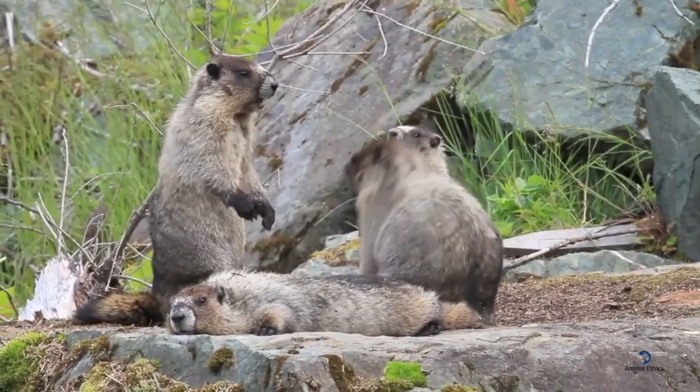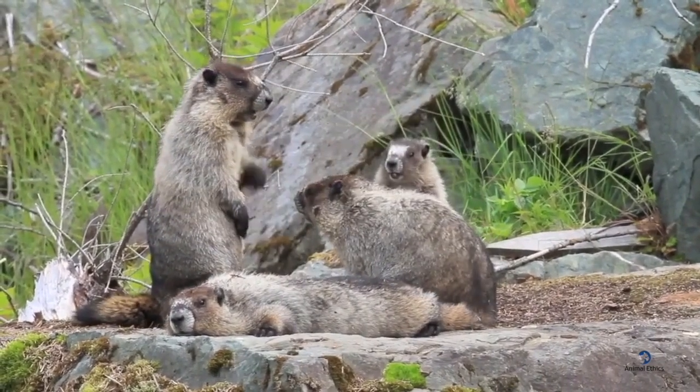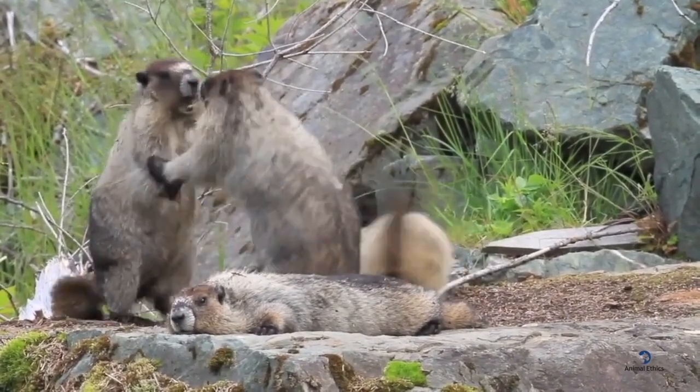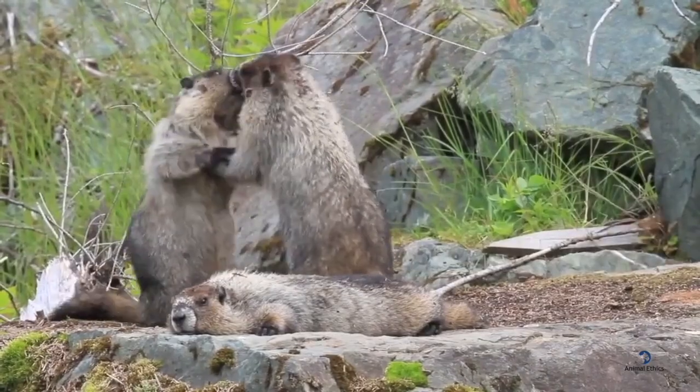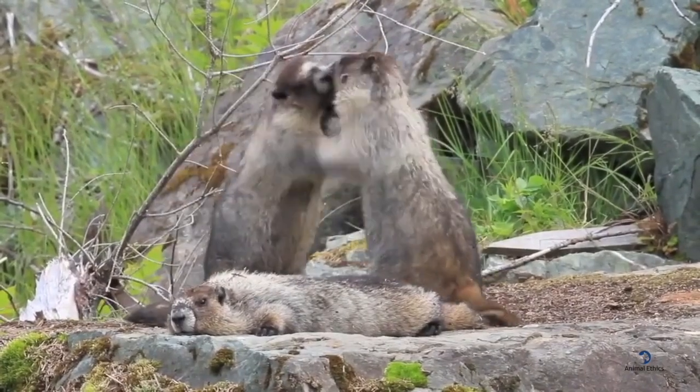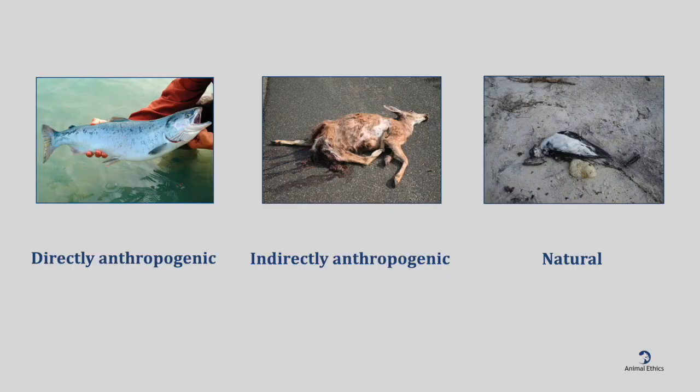Reasons for concern about the natural harms suffered by animals are not ultimately different from those informing the defense of animals harmed by human action. The motivation is very simple: we want animals to have good lives that are as good as possible, free from suffering and premature death. The point is that all the harm suffered by animals matters — not just directly anthropogenic ones, but also indirectly anthropogenic and natural ones.